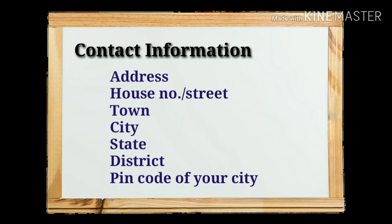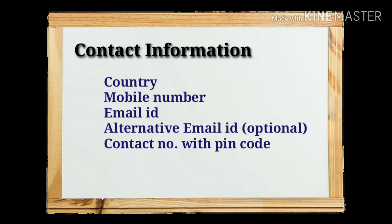You also need contact information: address including house number or street, area name, town or city, state or district, pin code of your city, country, and your mobile number — which must be authentic. You will also need your primary email ID, an alternative email ID (which is optional), and contact numbers with pin code.